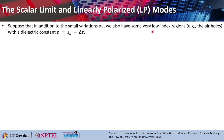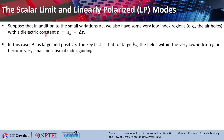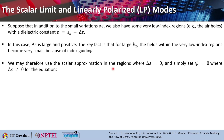In this equation, grad_t represents the x and y components of the del operator, and k_t is the transverse wave number defined as the square root of (ω²/c²·ε_c − kz²). This is the transverse component of the wave vector. In contrast to the traditional approach, a photonic crystal fiber generally has large index contrast. It may be surprising that it can be accurately described by a scalar approximation. Suppose that in addition to a small variation delta_epsilon, we also have very low index regions — air holes with dielectric constant epsilon_c minus delta_epsilon. For large Kz, the fields within these low index regions will become very small, confirming that index guiding is happening.